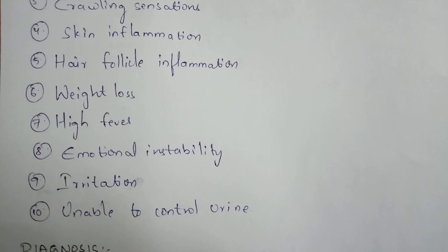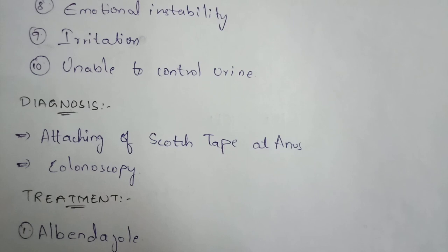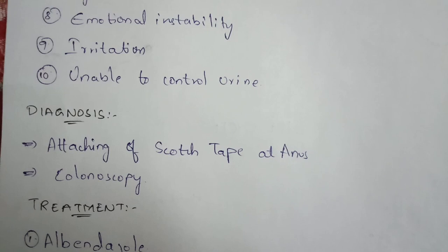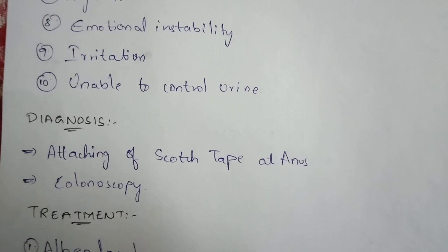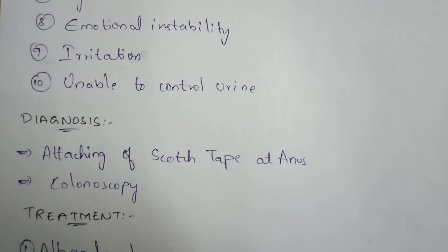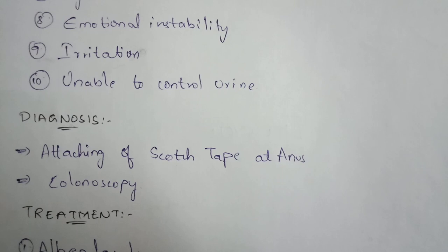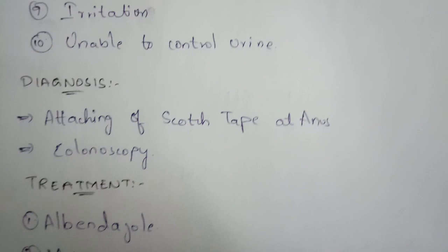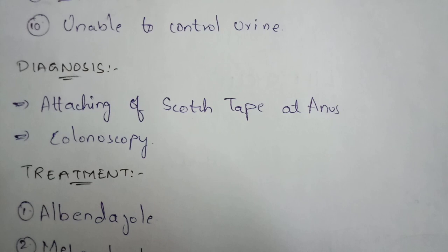For diagnosis, the scotch tape test is used: a transparent tape is attached to the perianal region (anus), and the eggs released by the pinworm get attached to the tape. The tape is then removed and examined. Another diagnostic test is colonoscopy, which is used to identify whether the eggs belong to pinworm or not.